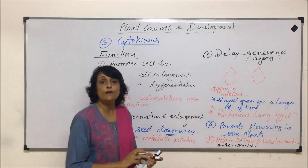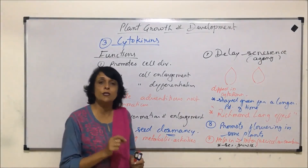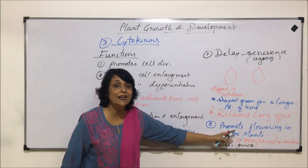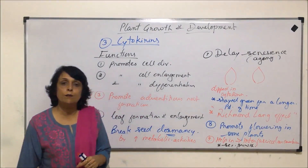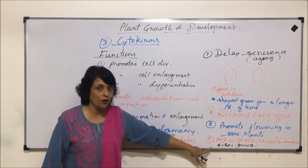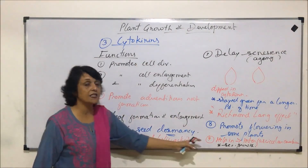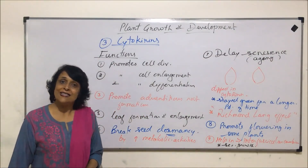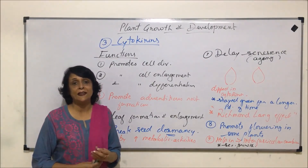This is seen in dicot stems, where between two vascular bundles — each having their own cambium strips — the parenchymatous tissue gets differentiated into interfascicular cambium. This interfascicular cambium then produces secondary phloem on the outer side and secondary xylem on the inner side during secondary growth in dicot stems. So in this differentiation process, cytokinin plays a very important role. These are the important functions of cytokinin, and next we will discuss the phytohormone ethylene.